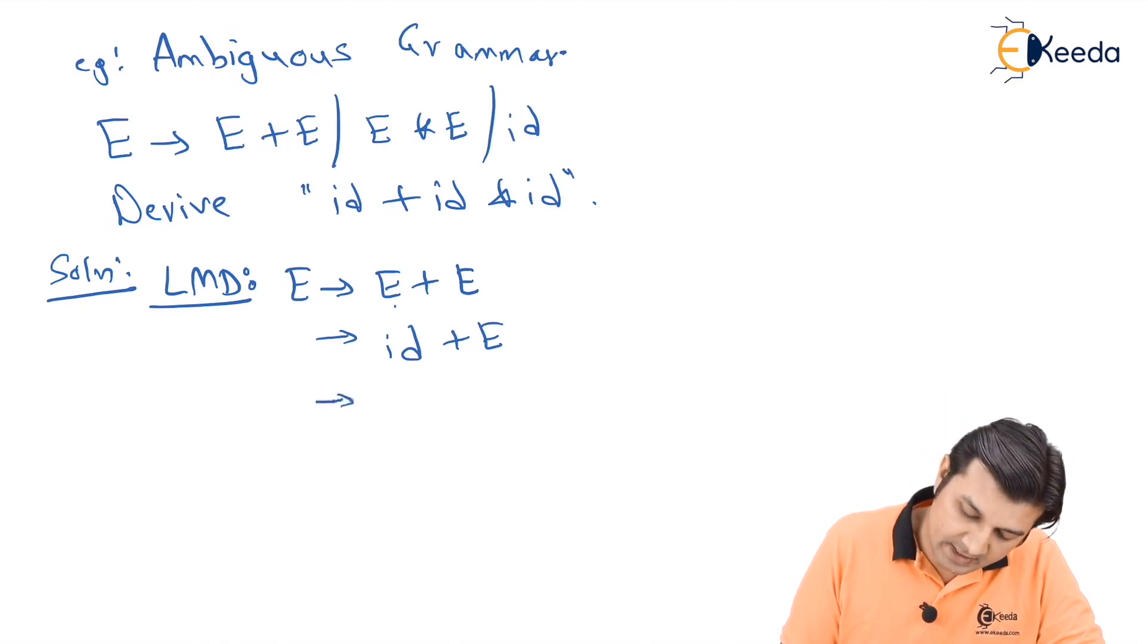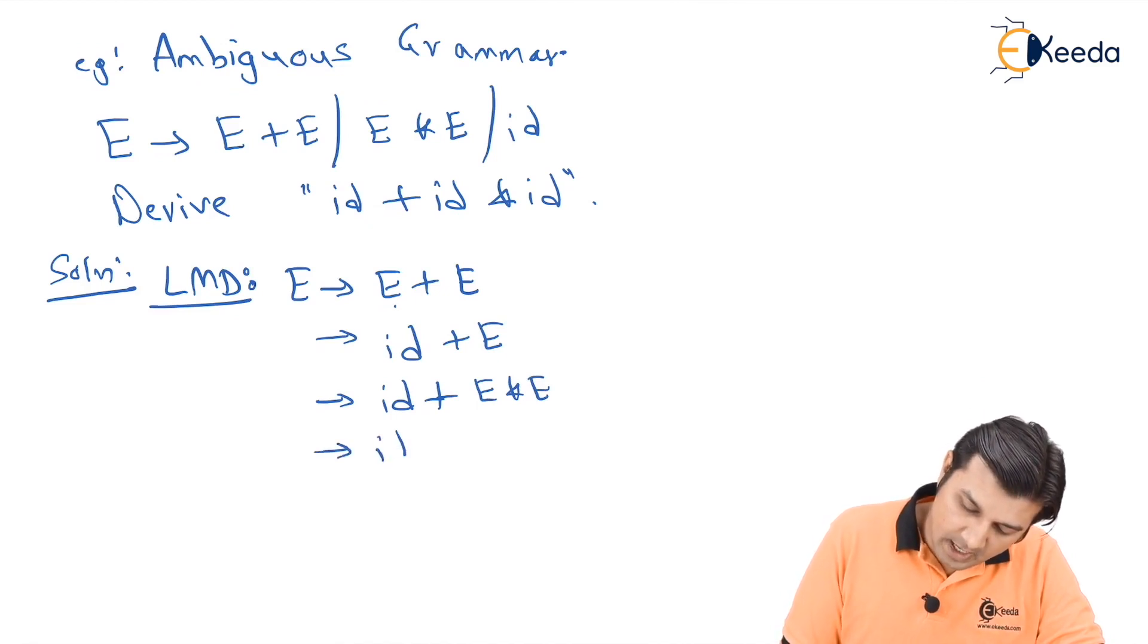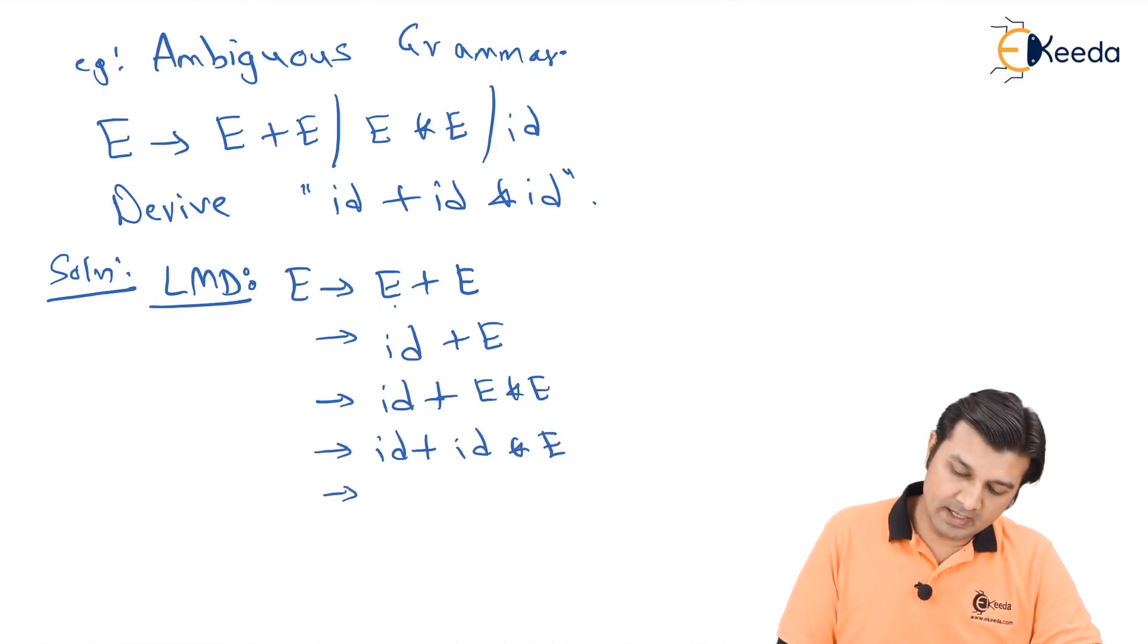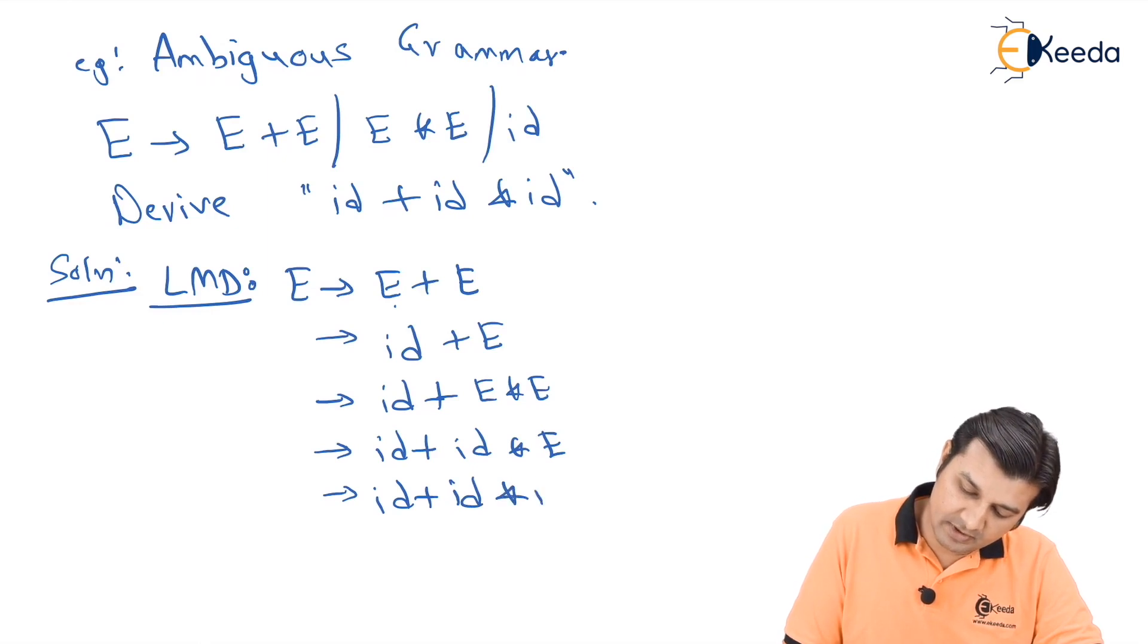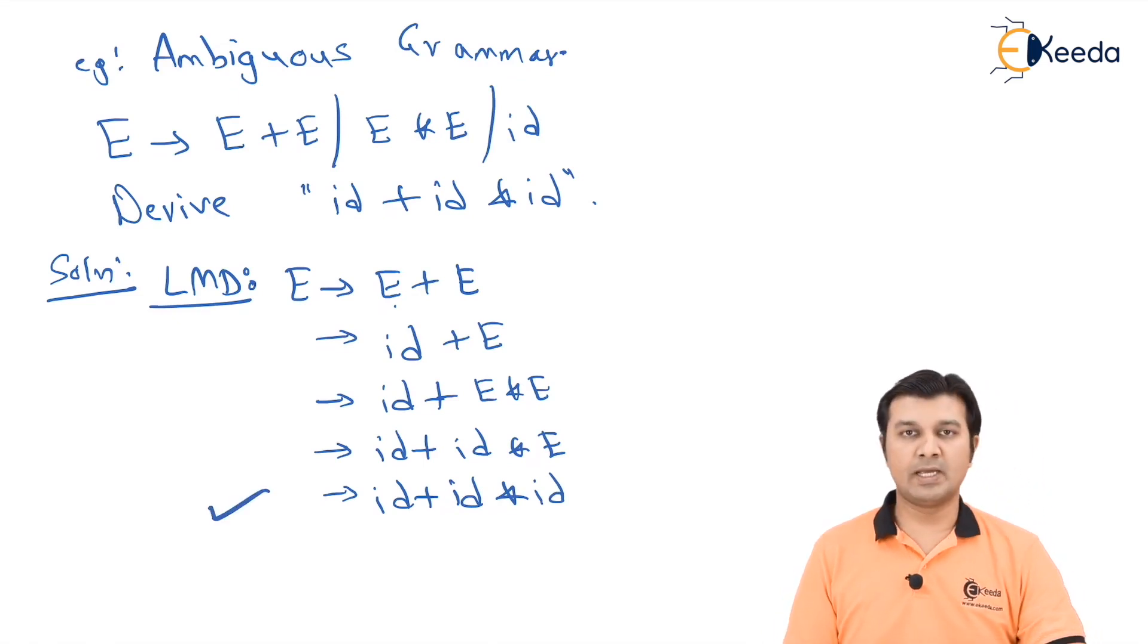Further going ahead, id will remain as it is, but instead of this E, I write E*E. Next time I say id + id * E, and lastly this E will also be replaced by id.